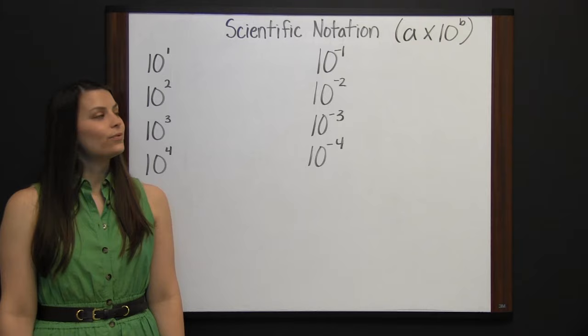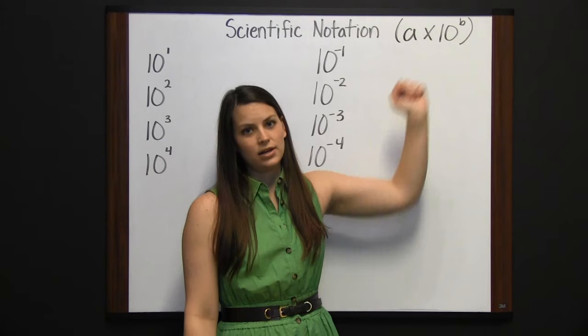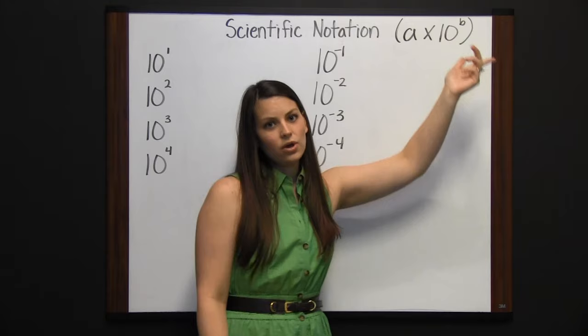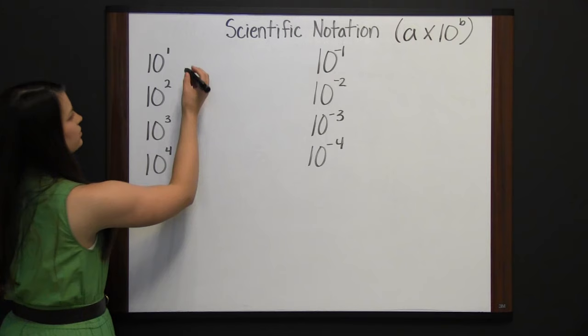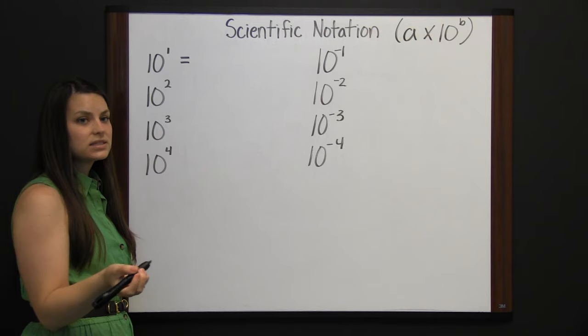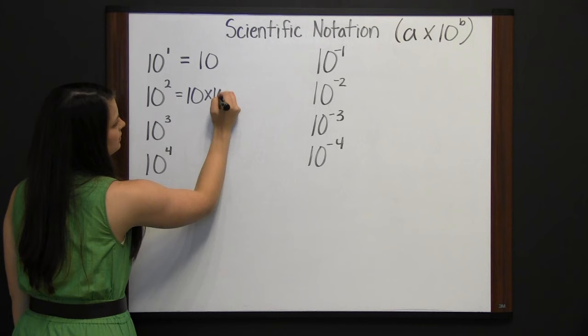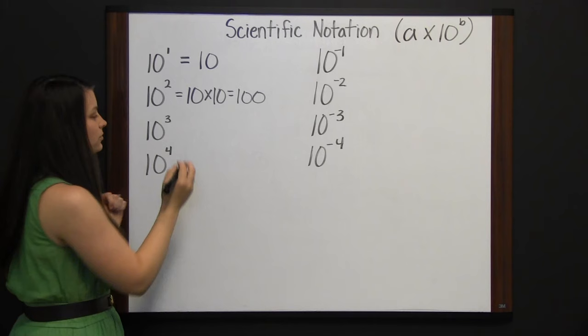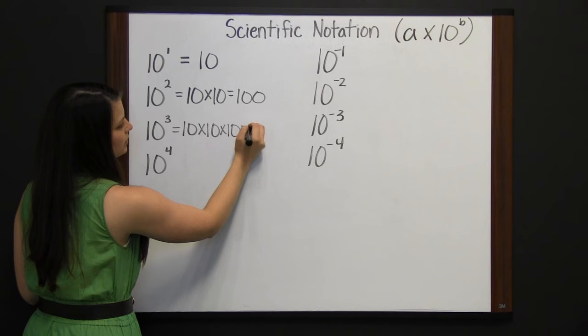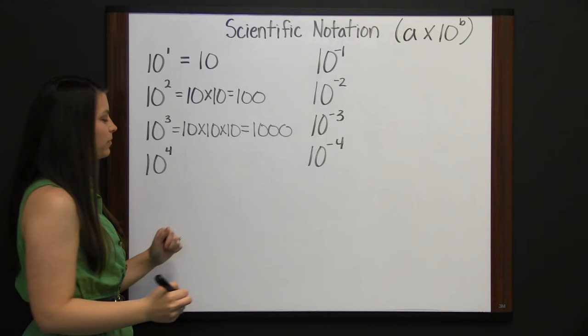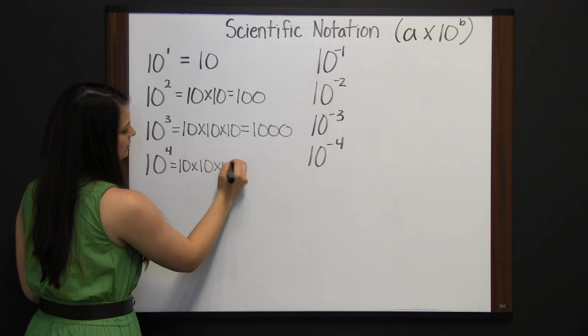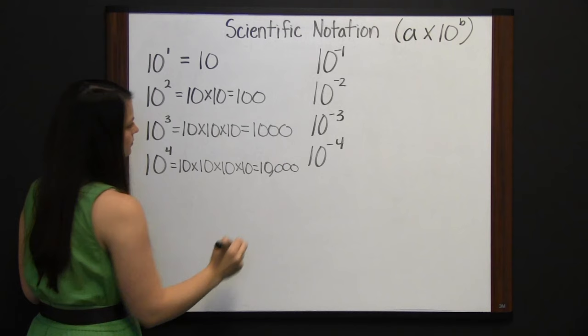Scientific notation is a way to express very large or very small numbers in the form A × 10^B, where A is a number between 1 and 10 and B is an integer. For example: 10^1 = 10, 10^2 = 100, 10^3 = 1,000, and 10^4 = 10,000. As the exponent increases, it's like moving the decimal place one position to the right.